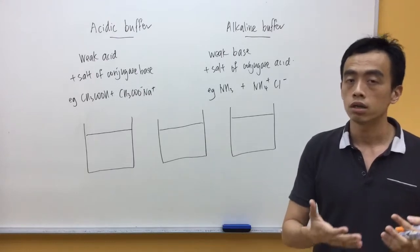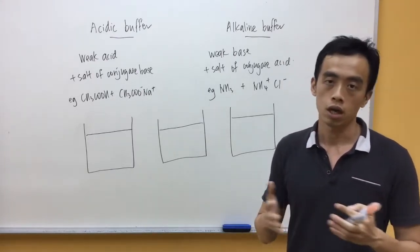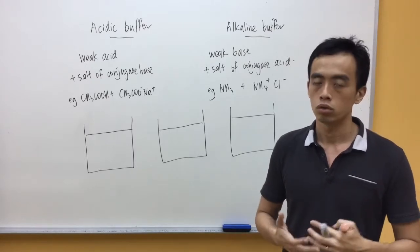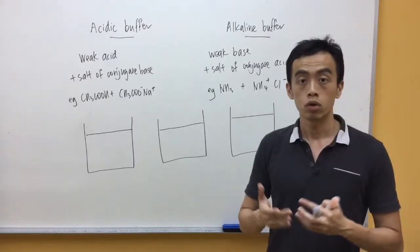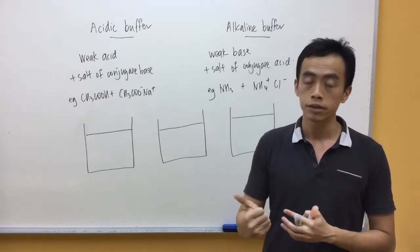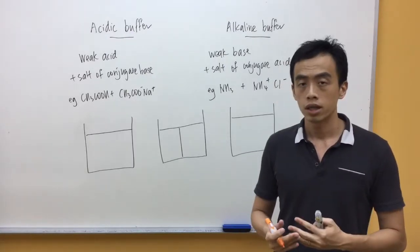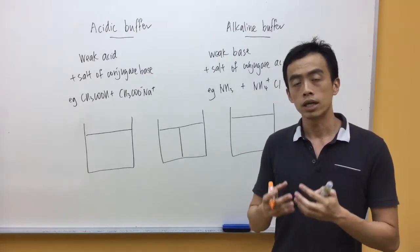This way, we define acidic buffers and alkaline buffers makes them very disjointed and unrelated to each other. So what is actually a buffer? We know that a buffer can maintain pH when we add a small amount of H+ or a small amount of OH-.